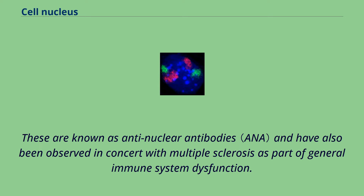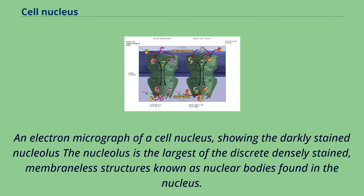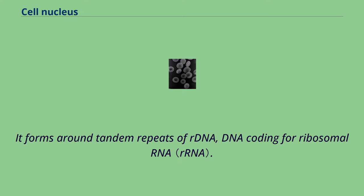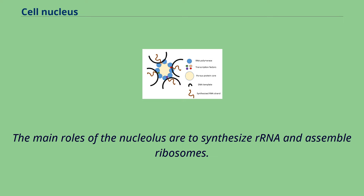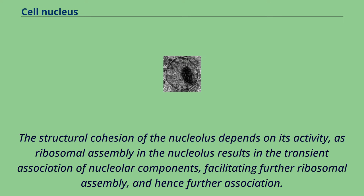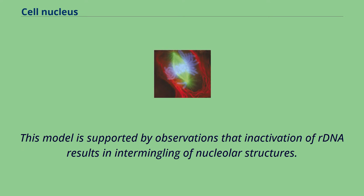An electron micrograph of a cell nucleus showing the darkly stained nucleolus. The nucleolus is the largest of the discrete densely stained, membraneless structures known as nuclear bodies found in the nucleus. It forms around tandem repeats of rDNA coding for ribosomal RNA; these regions are called nuclear organizer regions. The main roles of the nucleolus are to synthesize RNA and assemble ribosomes. The structural cohesion of the nucleolus depends on its activity, as ribosomal assembly in the nucleolus results in the transient association of nuclear components, facilitating further ribosomal assembly. This model is supported by observations that inactivation of rRNA results in intermingling of nuclear structures.